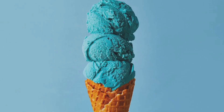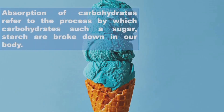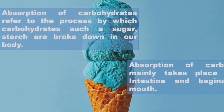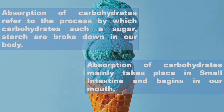Absorption of carbohydrate refers to the process by which carbohydrates such as sugar and starch are broken down in our body. Absorption of carbohydrate mainly takes place in the small intestine and begins in our mouth.